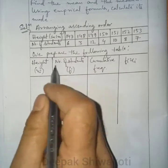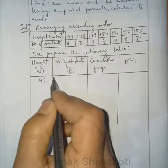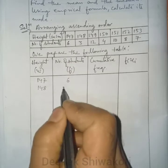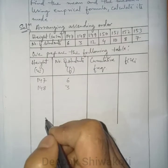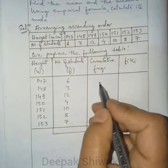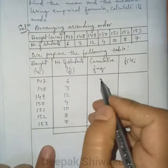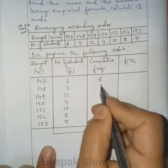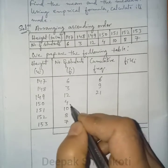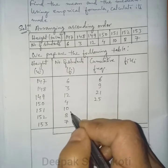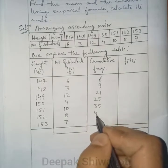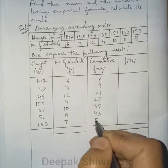Filling the table: height 147 has 6 students, 148 has 3, and so on. Cumulative frequencies: 6, 9, 21, 25, 35, 43, 50. The fi·xi products are: 147×6=882, 148×3=444, and so on for all values.